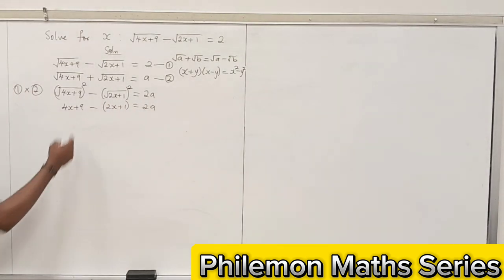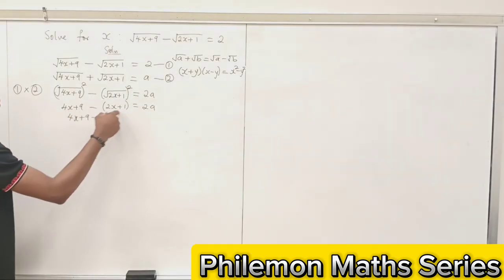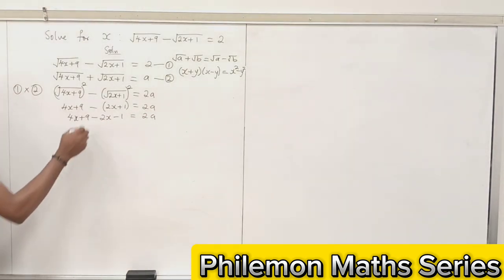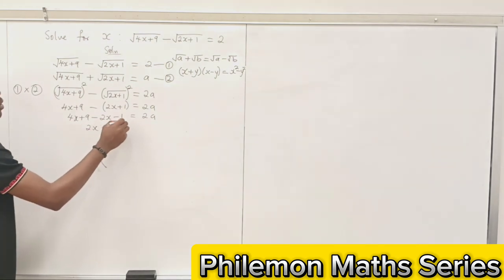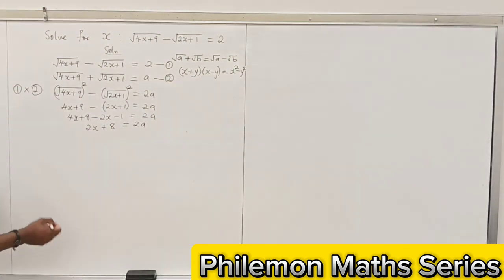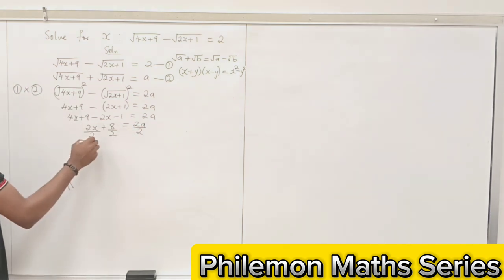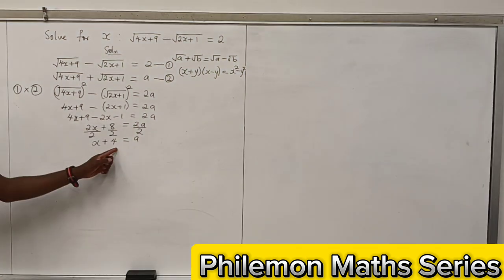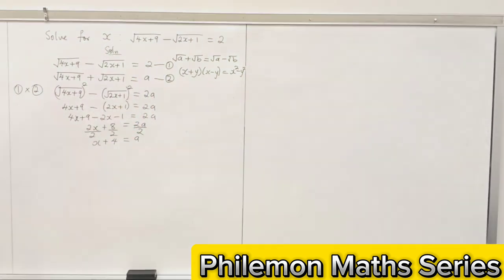Let's simplify that. Opening the bracket, we'll have 4x plus 9 minus 2x minus 1 equals 2a. 4x minus 2x will give 2x. 9 minus 1 will give 8, so 2x plus 8 equals 2a. We can divide through by 2, which is common, so that we'll have x plus 4 equals a.